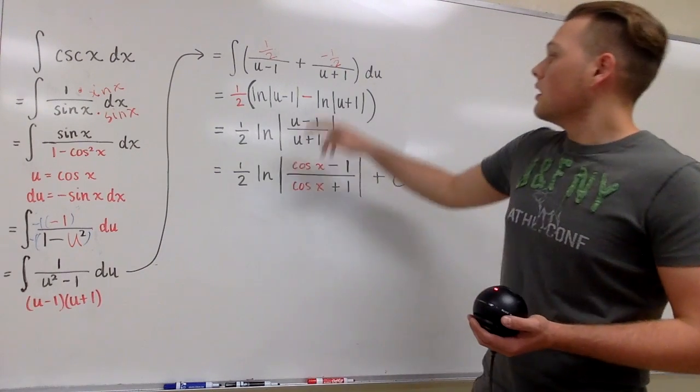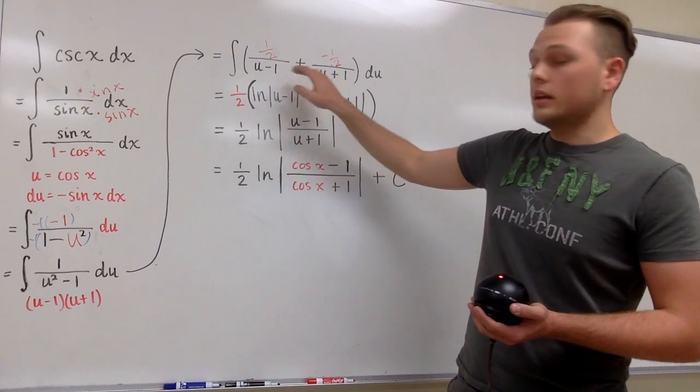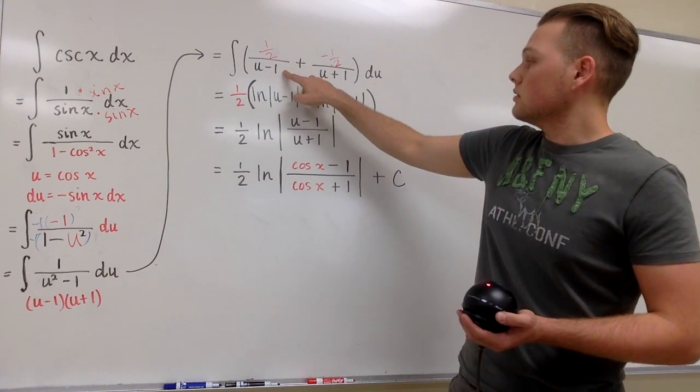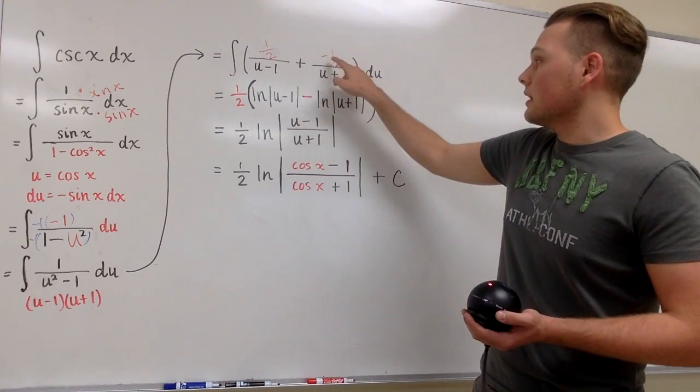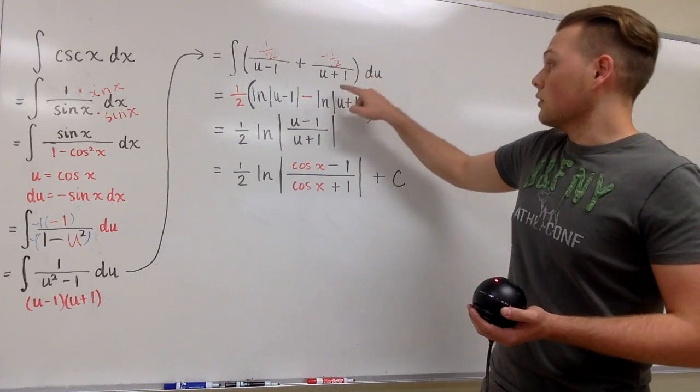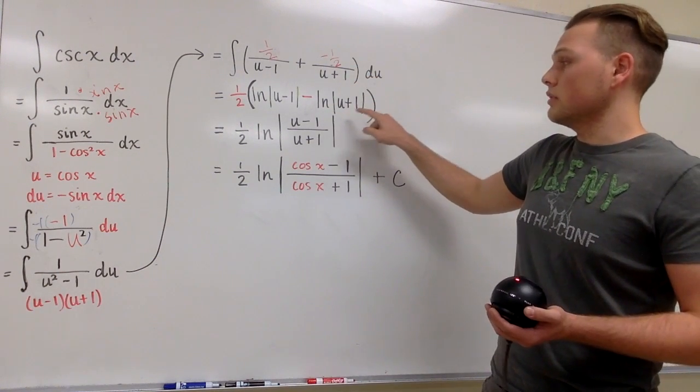Now I'm going to pull out the 1 half and integrate it. We're going to have 1 over u minus 1 to be the natural log of the absolute value of u minus 1, and we're going to keep that negative from that negative 1 half and say the integral of 1 over u plus 1 to be natural log of the absolute value of u plus 1.